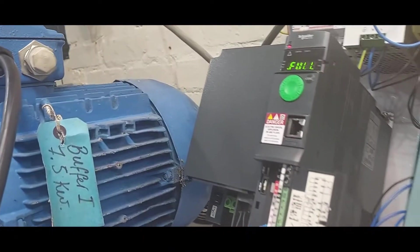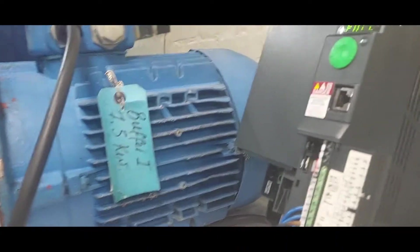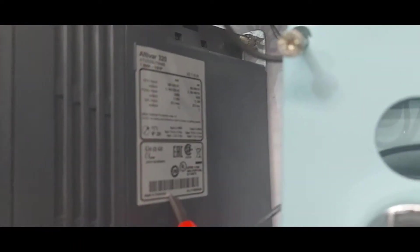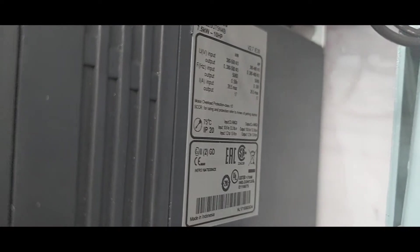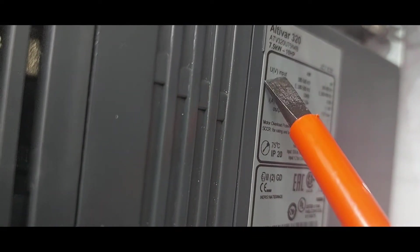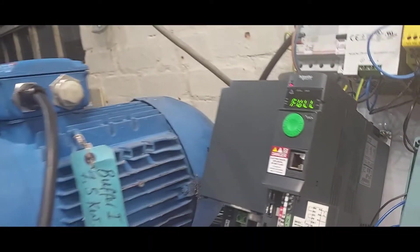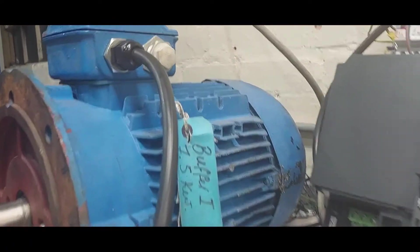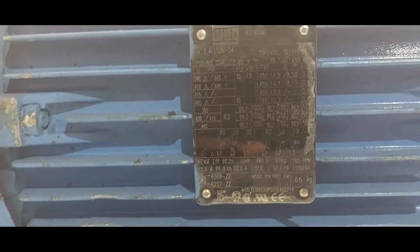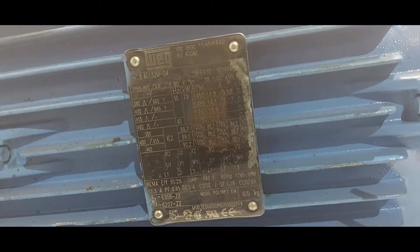To be able to choose the right inverter for an electrical motor, we have to study the rating plate of the inverter. Here it says 7.5 kilowatts. And we have to study the rating plate of the motor that we want to connect—7.5 kilowatts as well.